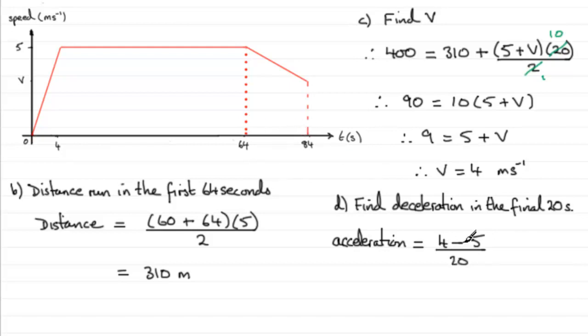So if you work this out, you're going to have minus 1/20th, minus 1/20th meter per second per second. So that's the acceleration, and you'll notice it's negative.